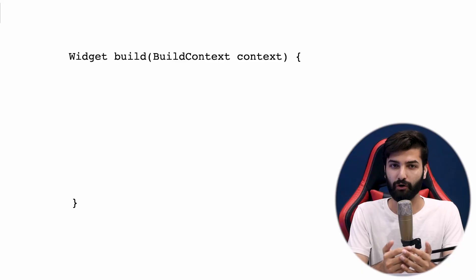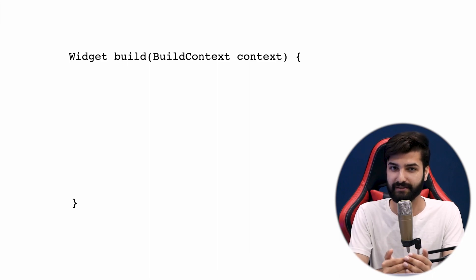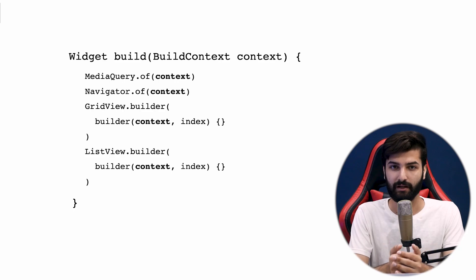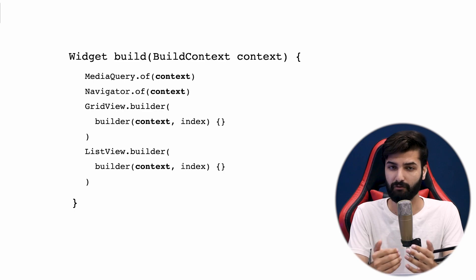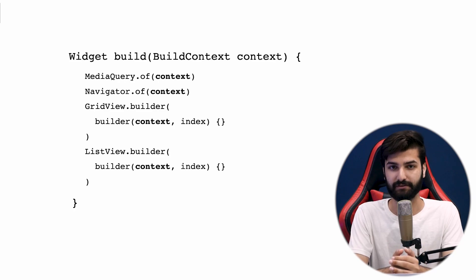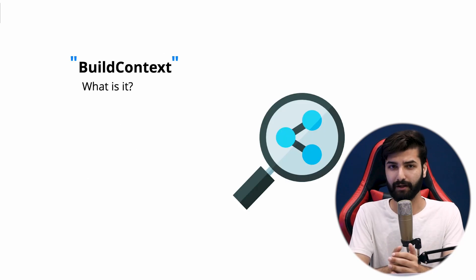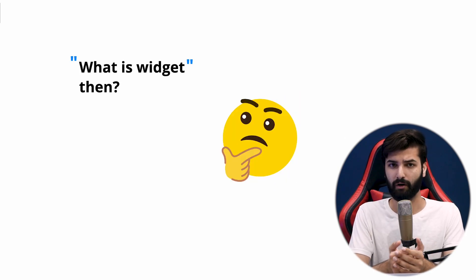Hello and welcome everyone. In today's episode we will dig deeper and understand what BuildContext is and what it actually means. You may have seen the build method of either a StatelessWidget or a StatefulWidget in Flutter takes a BuildContext, and widgets like MediaQuery.of(context), Navigator.of(context), ListView.Builder, GridView.Builder also need that context. BuildContext represents the location of a widget in a widget tree.